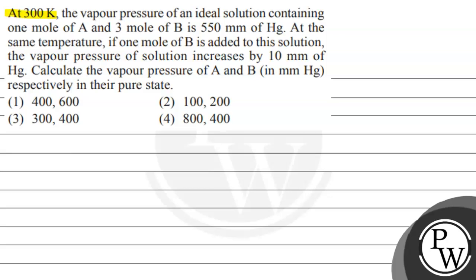Hello, let's read this question. At 300 Kelvin, the vapor pressure of an ideal solution containing 1 mol of A and 3 mol of B is 550 mm of Hg. At the same temperature, if 1 mol of B is added to this solution, the vapor pressure of the solution increases by 10 mm of Hg.